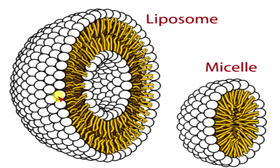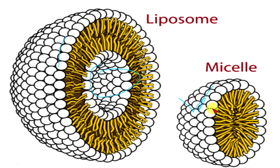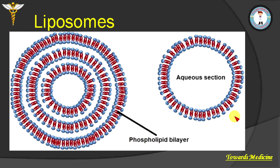Liposomes are different from micelles because they are composed of a lipid bilayer, as you can see here. In the case of micelles, only a single layer of lipid is present, in which the hydrophilic region faces outward towards water and the hydrophobic core is directed inward.